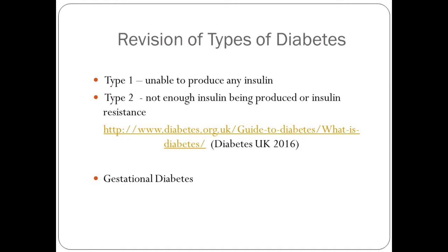The information in the workshop included a revision of the different types of diabetes. Type 1 diabetes occurs because the insulin-producing cells in the body have either been destroyed or the body is unable to produce any insulin. Insulin is the chemical messenger that helps your body use glucose for energy — you can envisage it as a key that unlocks the door to the body's cells so glucose can enter and be used as fuel. In type 1 diabetes, the body cannot produce insulin, so there is no key to unlock the door and glucose levels build up in the blood.